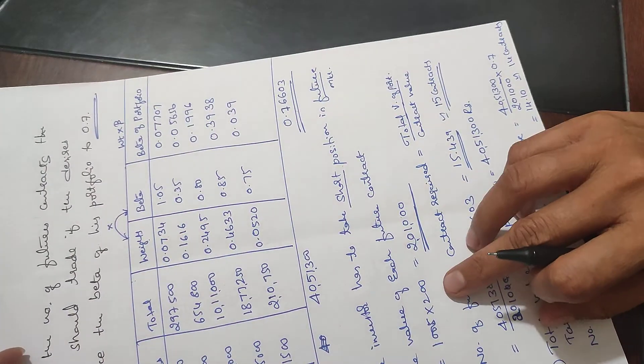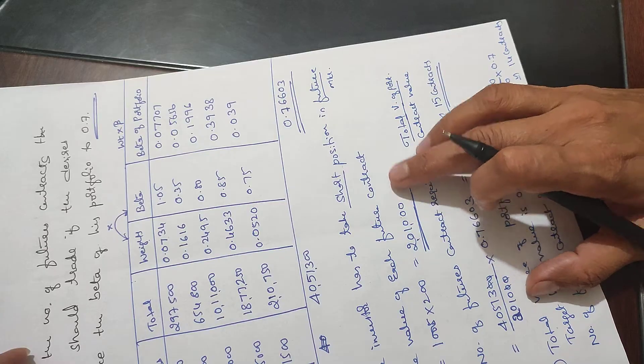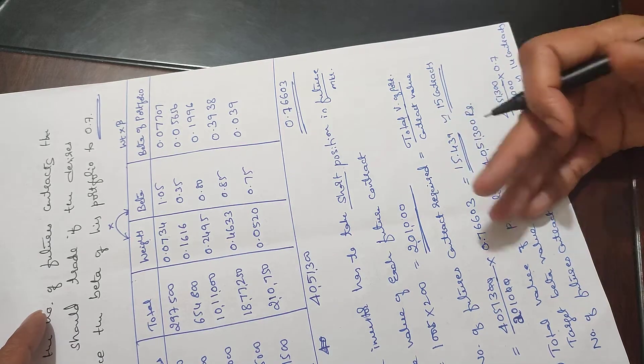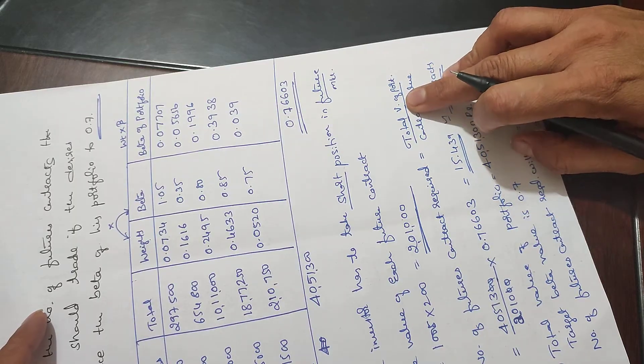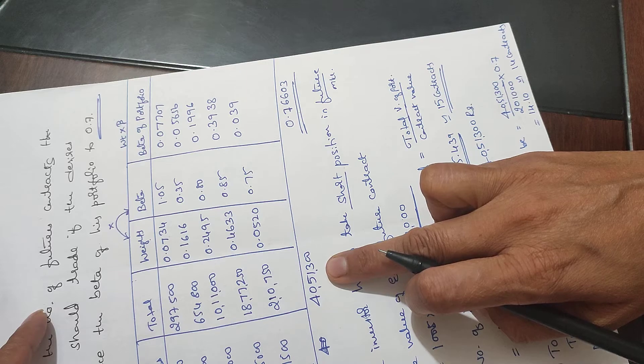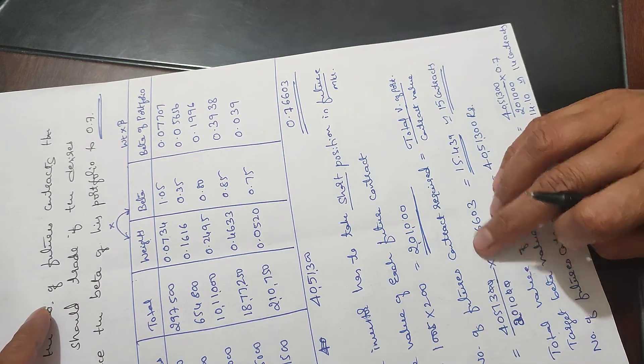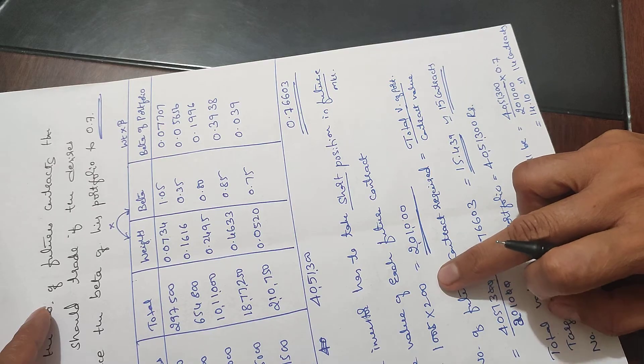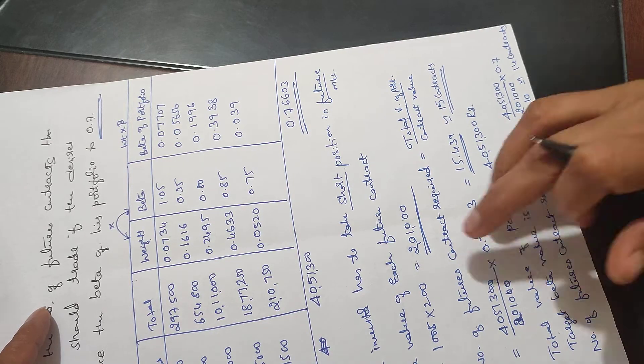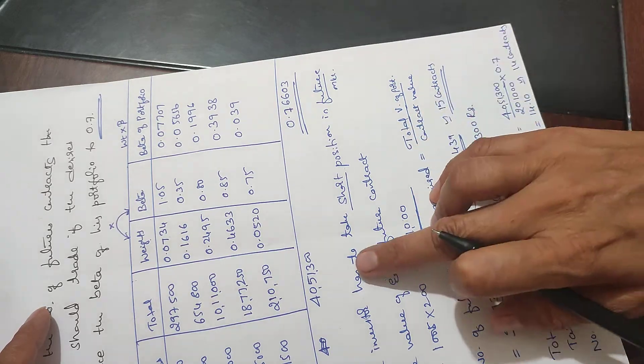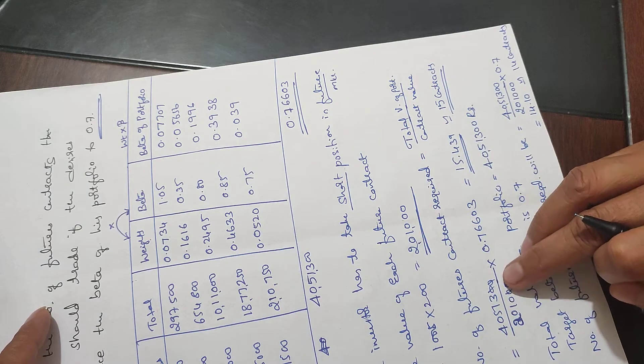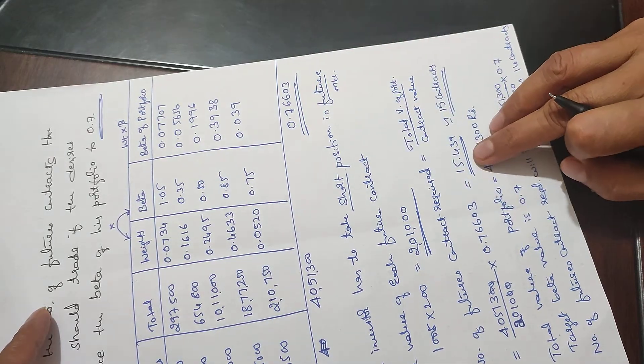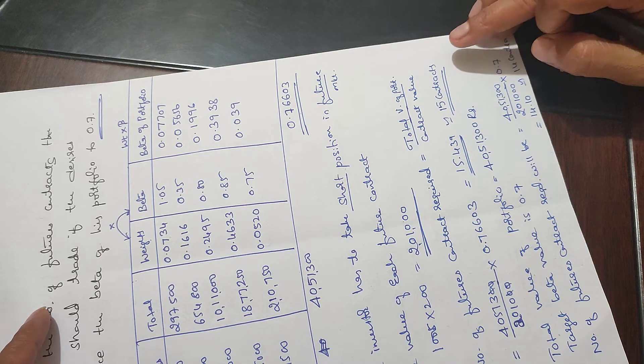The value of each future contract is 2 lakh 1,000. Number of future contracts required equals total portfolio value (40 lakh 51,300) divided by contract value (2 lakh 10,000) times portfolio beta (0.766), which equals 15.439 contracts, or 15 contracts to short.